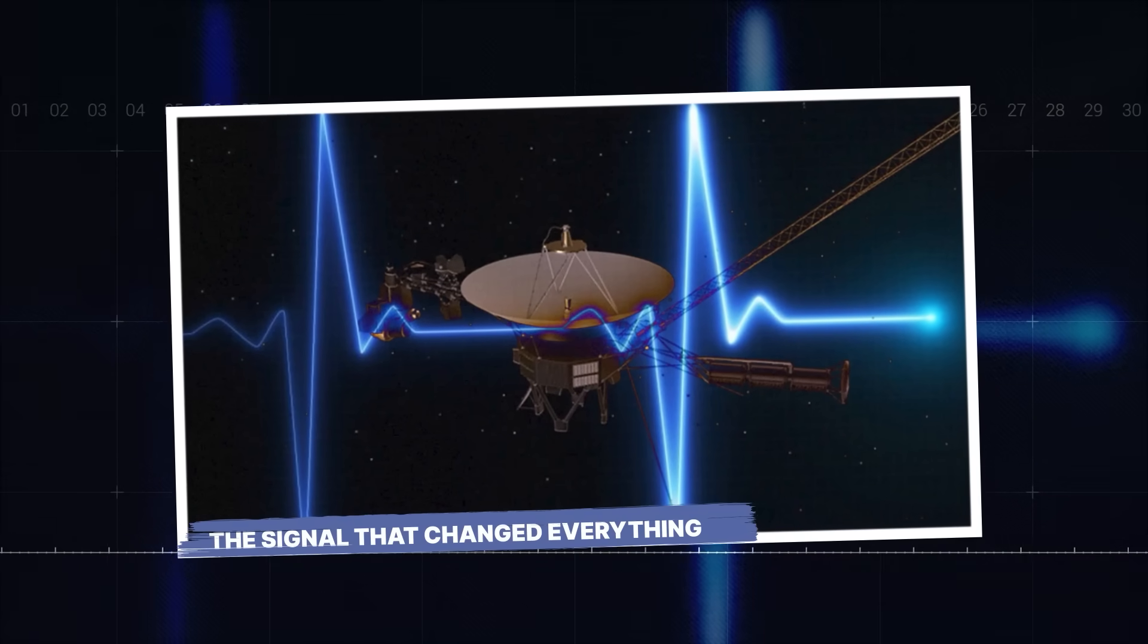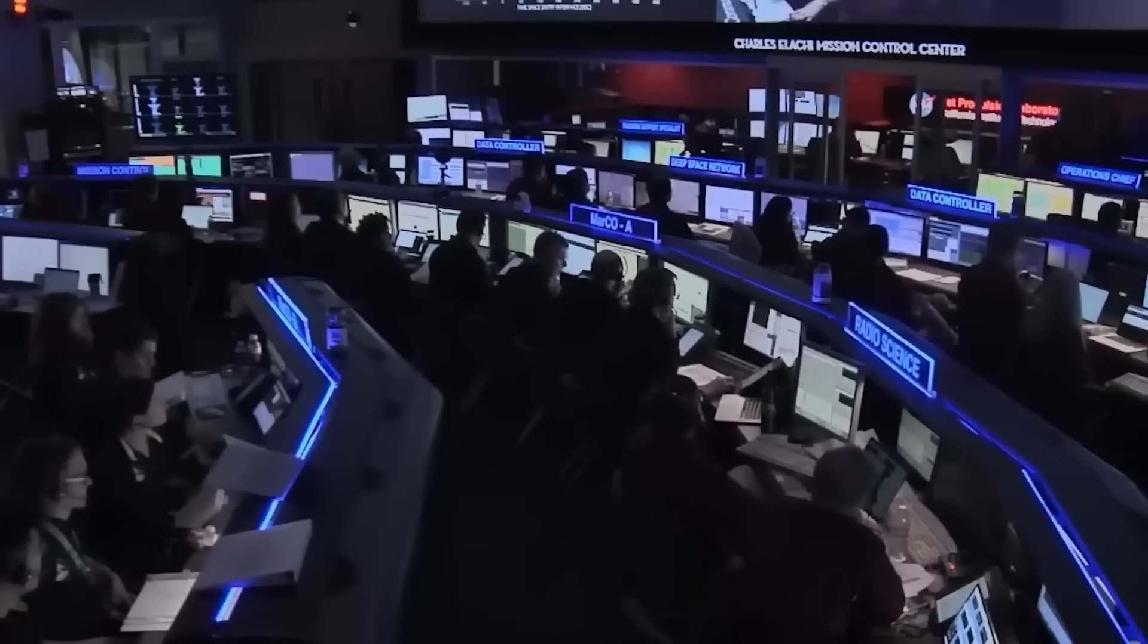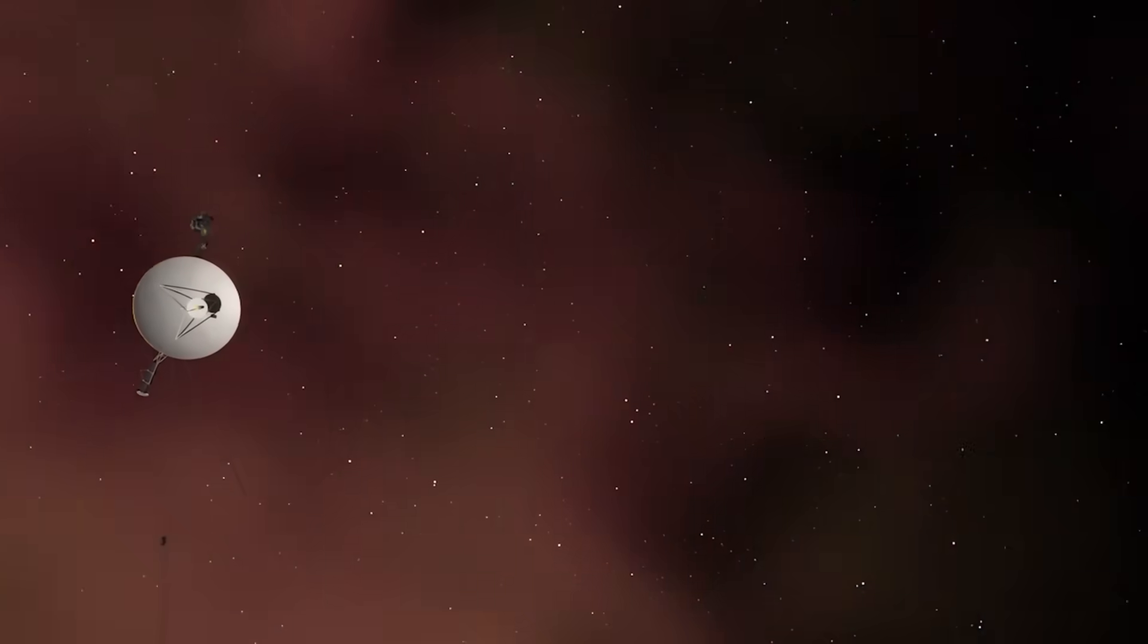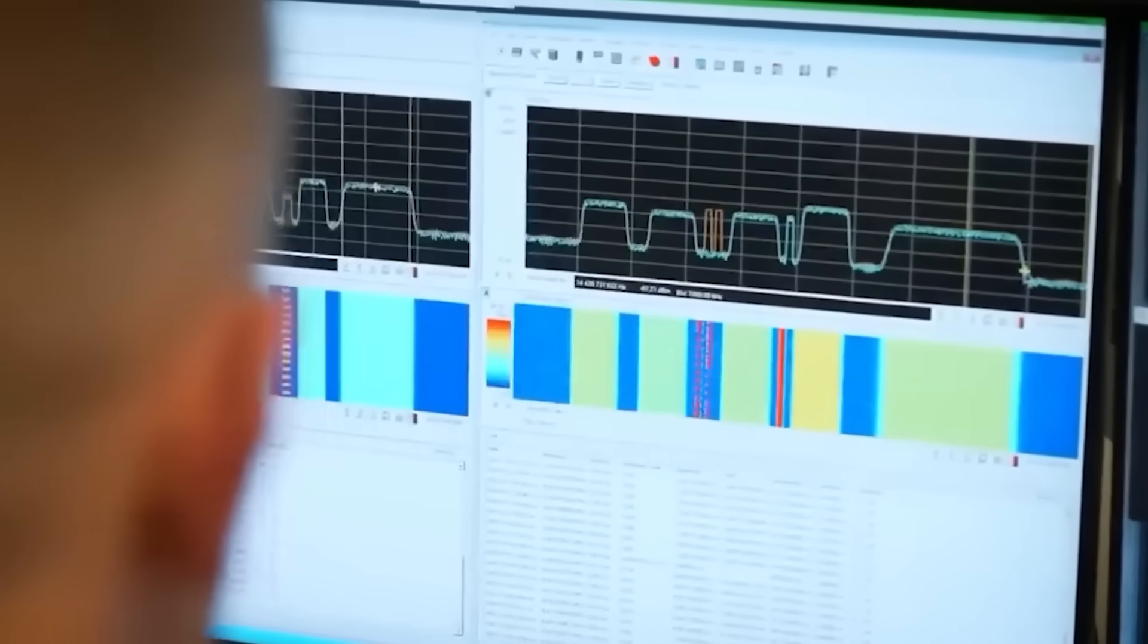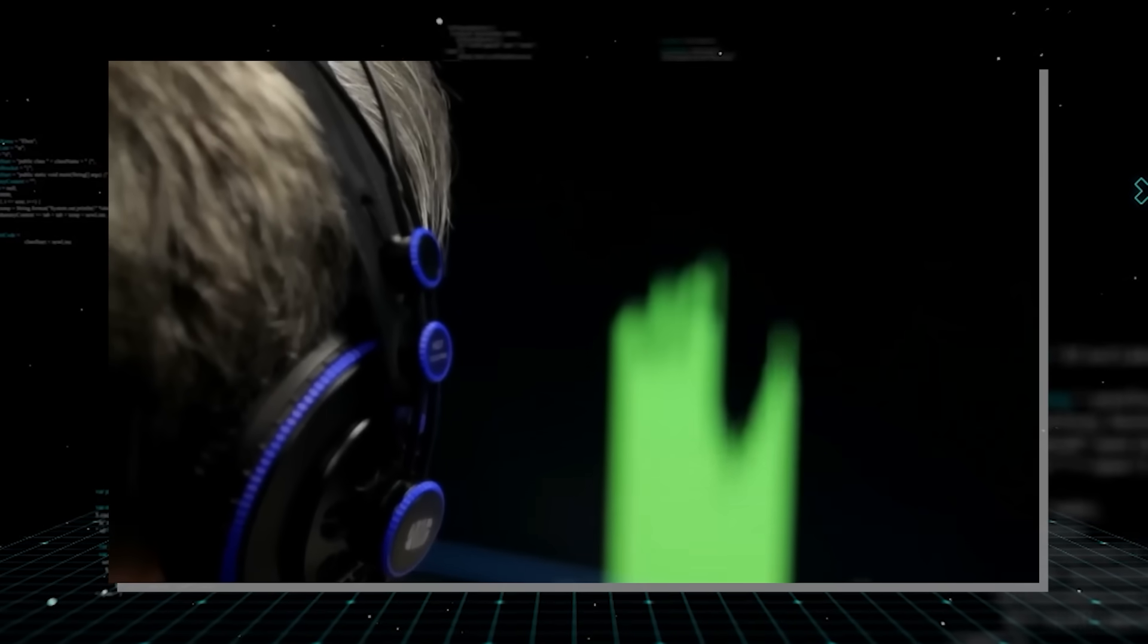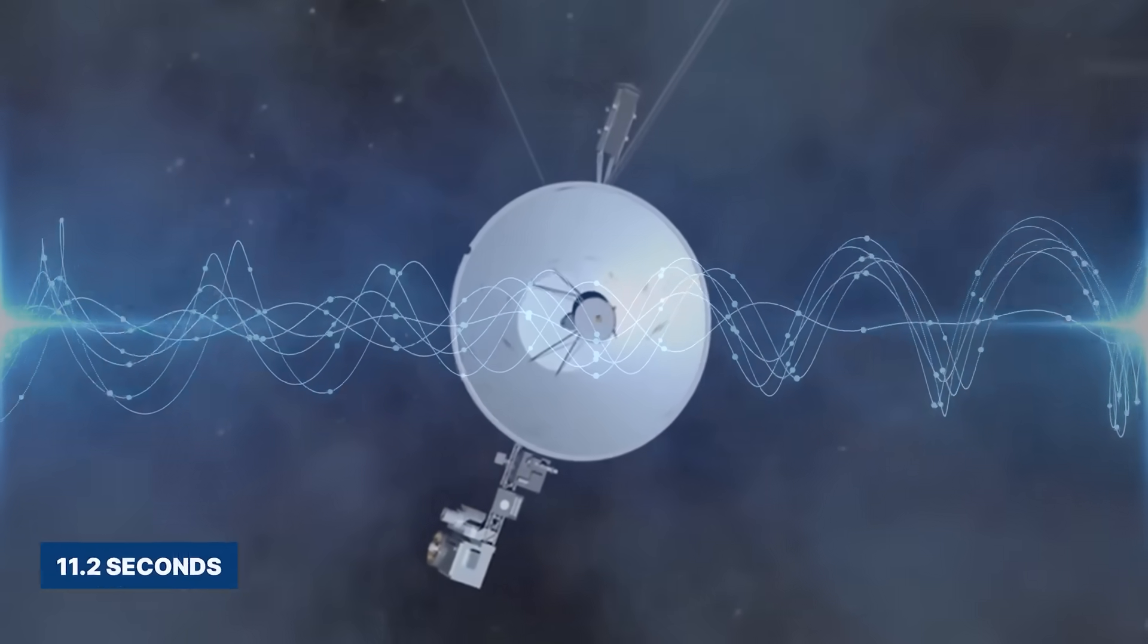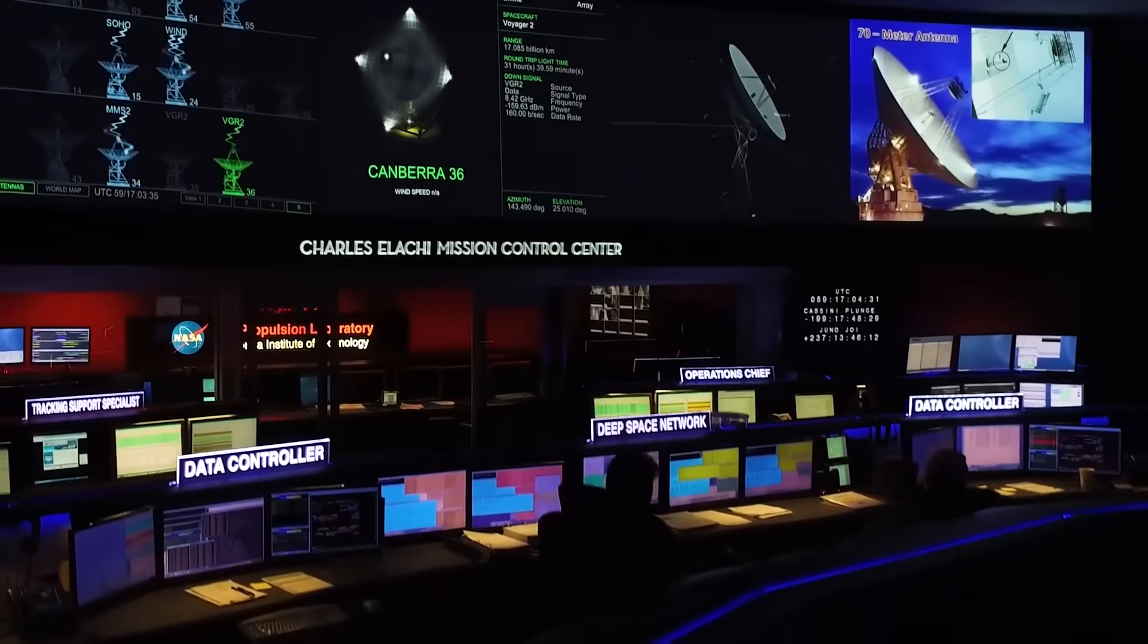The signal that changed everything. You see, the data that streams from Voyager 2 is usually predictable, a faint whisper against the background roar of the universe. But what many overlooked in a recent data dump was a spike. A tiny, low-frequency pulse that appeared, vanished, and then appeared again exactly 11.2 seconds later. That's not noise. That's a clock.